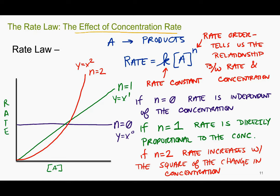If n equals 2, the rate increases and decreases with the square of the change in concentration. If you doubled the concentration, your rate would increase by 2 squared, 4. If you tripled your concentration, 3 squared, or 9, your rate would increase by a factor of 9. That's where that parabolic, that x squared shape comes from.